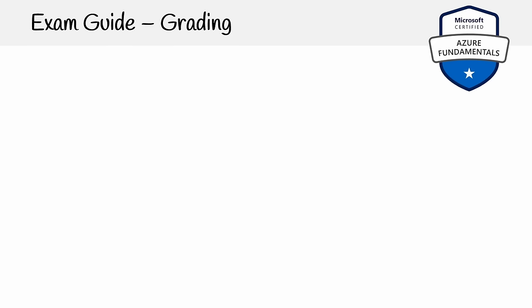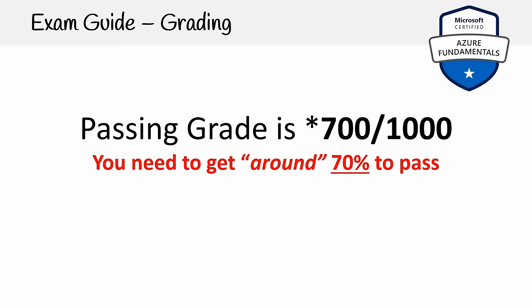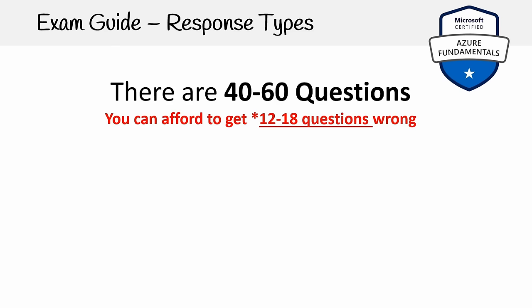For grading, you need to score 700 out of 1000 to pass. Generally that's around 70%, but Azure uses scaled scoring, meaning the raw score doesn't necessarily reflect the final score. Aim for 75% or higher. There are between 40 to 60 questions, giving you a chance of getting 12 to 18 wrong. Some people report being presented with only 30 questions — even Azure support confirmed the official number is 40 to 60, but individual experiences may vary.